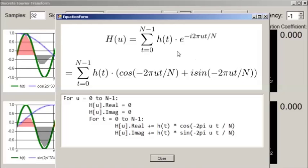The transform is computed as the dot product for each frequency u of a sine and cosine of that frequency with the original signal.